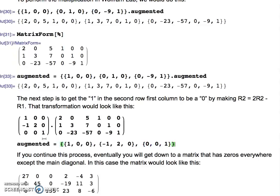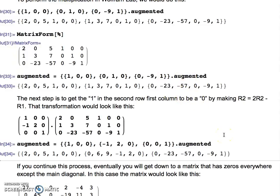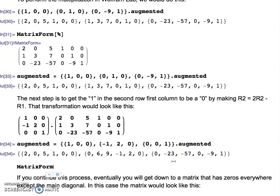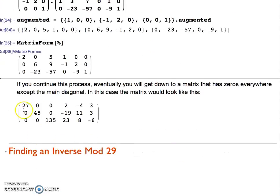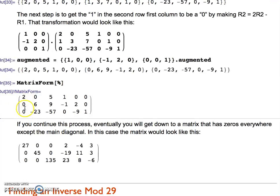...dot augmented. Keep in mind augmented is now the already multiplied from the first step matrix. Shift-enter. I can look at that as matrix form if I want to, and I can see I have two zeros, here and here.